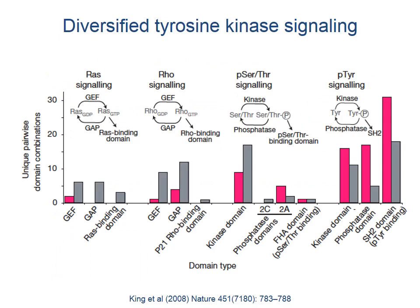Yet another evidence of genetic experimentation on the lineage leading to choanoflagellates and animals is the diversity of kinase domain-containing genes in Monosiga brevicollis. Kinases are signaling proteins whose specificity is provided by the other protein domains with which they are associated. In a figure, unique domain combinations found in the Monosiga brevicollis genome are shown in pink, while combinations found in both choanoflagellate and metazoan genomes are shown in gray.